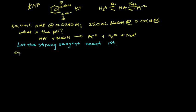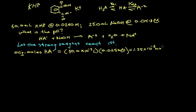So let's calculate the original moles of each starting material. The original moles of HA equals 50 milliliters, or 50 times 10 to the minus 3 liters, times its concentration, 0.0250 molar. This gives us 1.25 times 10 to the minus 3 moles of HA.